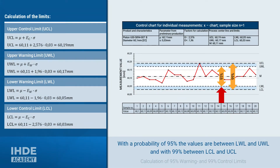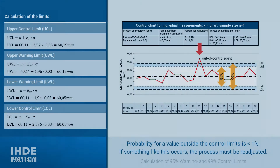The area between the lower and the upper warning limit has a white background. It can be assumed with a probability of 95% that the diameters of the pistons will be in this range. The control limits are wider and shown with a blue background — 99% of the diameters will probably be in this range if the process is in control. The probability that a value is outside the control limits is therefore less than 1%. If one of the control limits is exceeded, this is an indication of an out-of-control process, and a readjustment may be necessary.